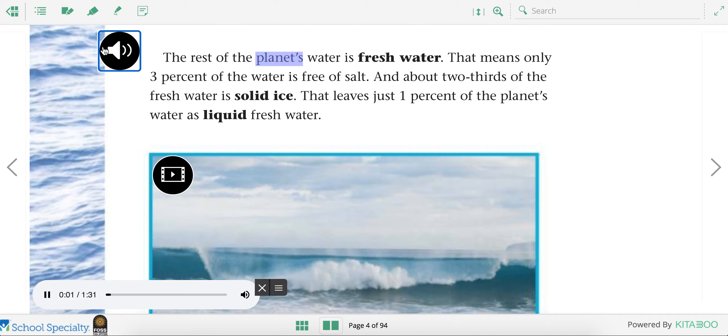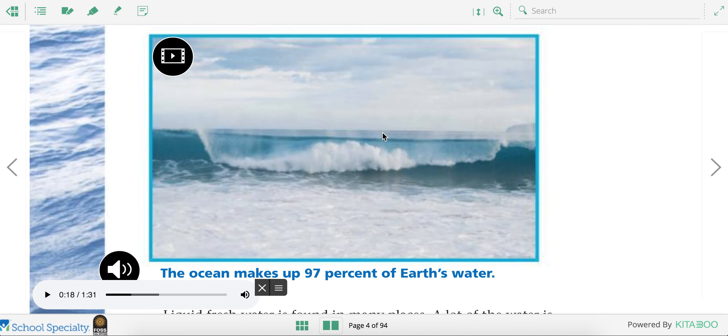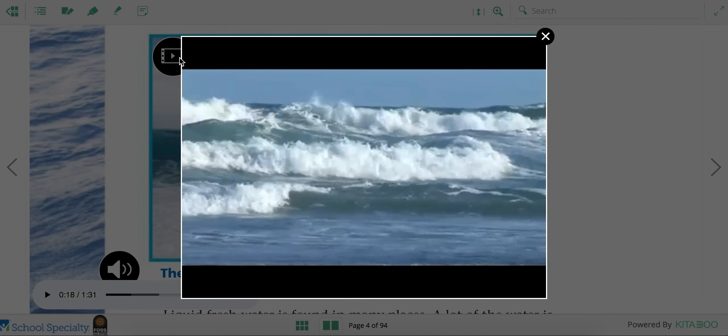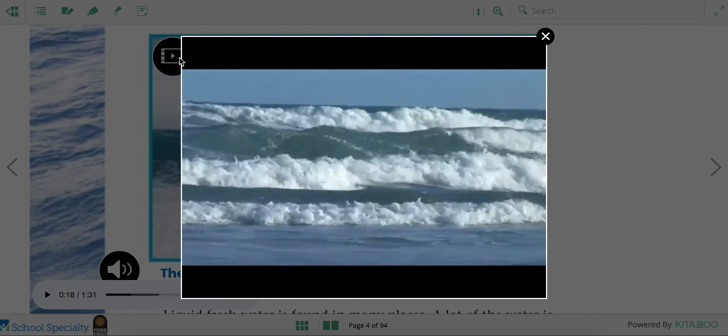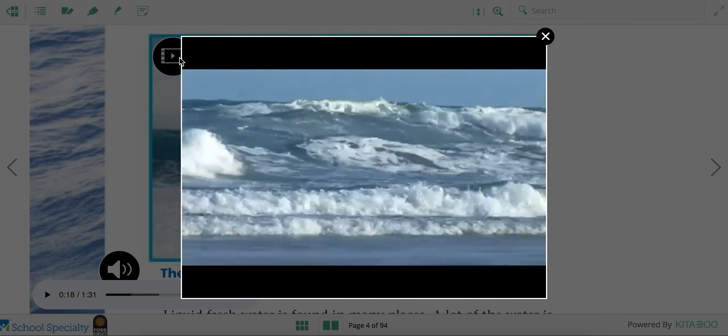The rest of the planet's water is fresh water. That means only three percent of the water is free of salt. And about two-thirds of the fresh water is solid ice. That leaves just one percent of the planet's water as liquid fresh water. So even though Earth is covered by so much water, the majority of the water we can't really use. Only one percent of the water is fresh water that we can drink.